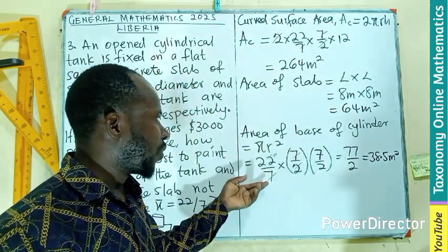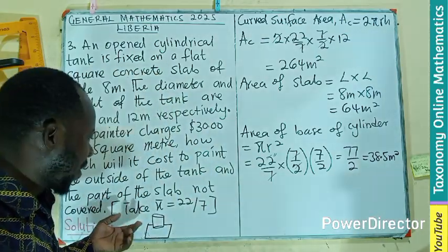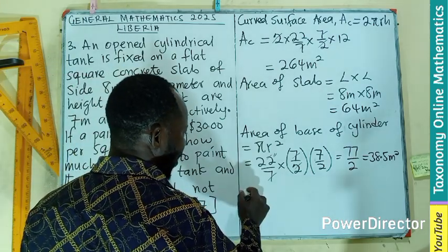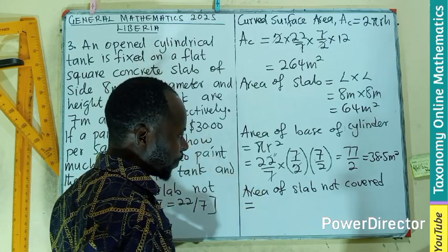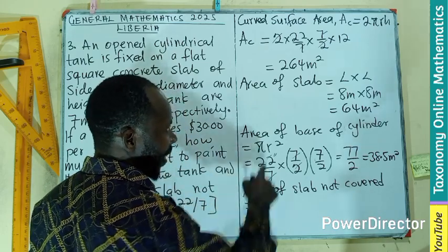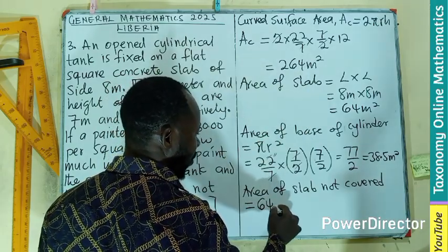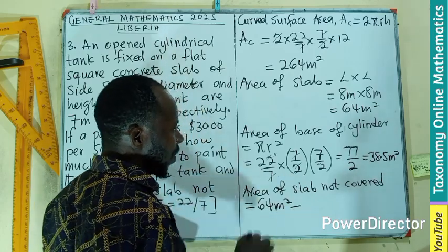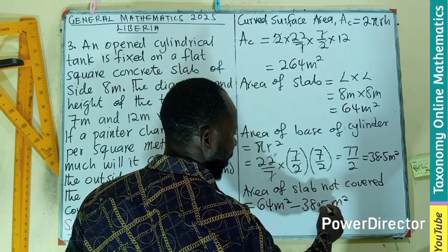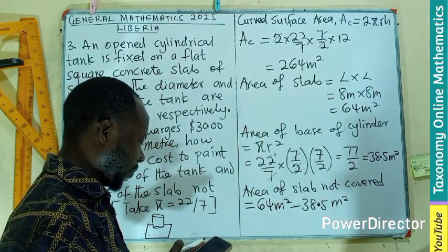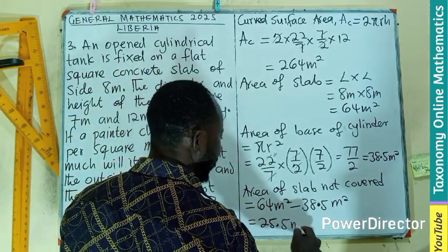Now you're going to find the area of the uncovered part of the square. The area of the slab not covered is going to be the area of the slab, the actual area, which is 64 meters squared, minus the area of the supposed base, which is 38.5 meter square. Then if you perform that subtraction, we should be left with 25.5 meter square.